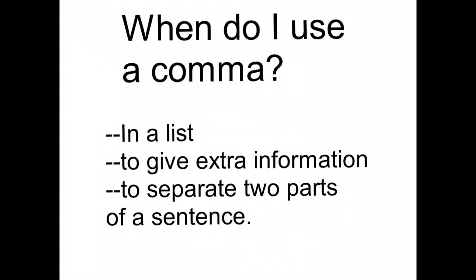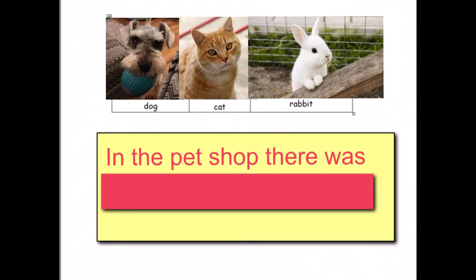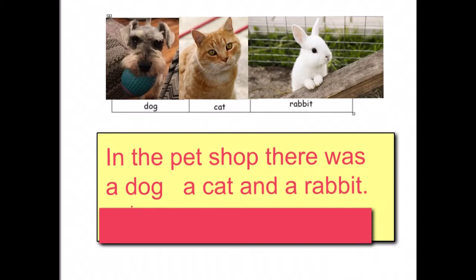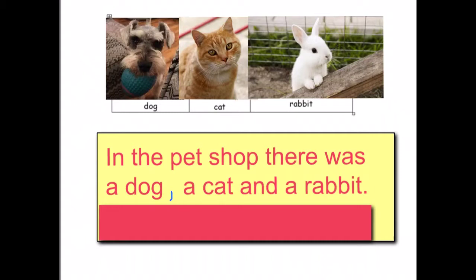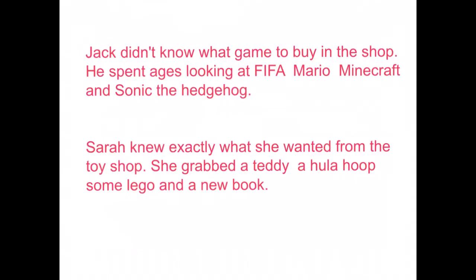In our first example, let's look at the use of a comma to separate items in a list. In the pet shop there was a dog, a cat, and a rabbit. We have to separate the items, so we put a comma between dog and cat. Because rabbit is the last item, we can use 'and' before it.